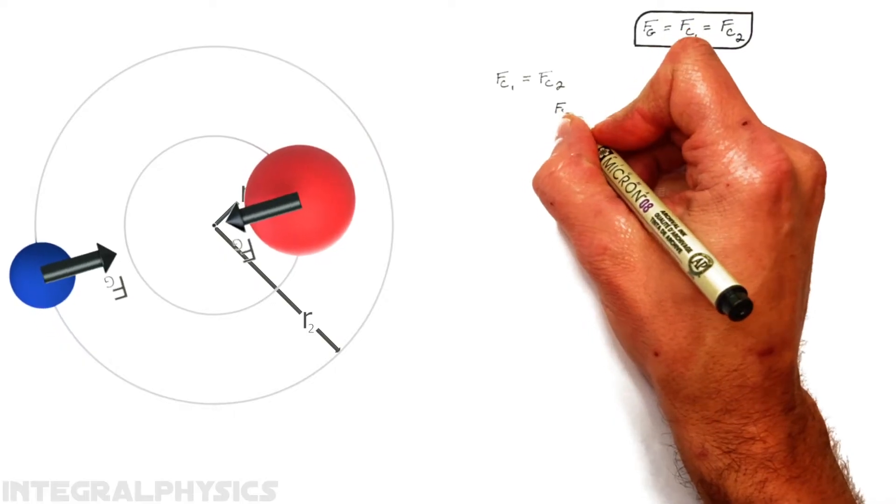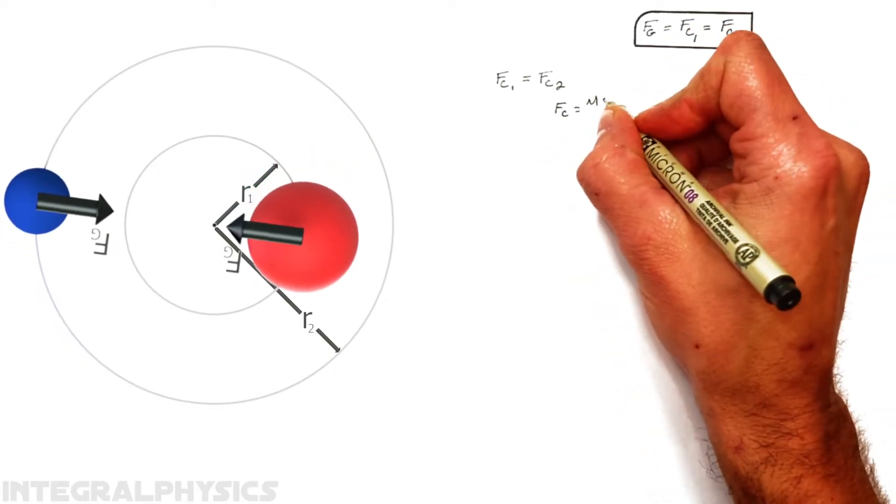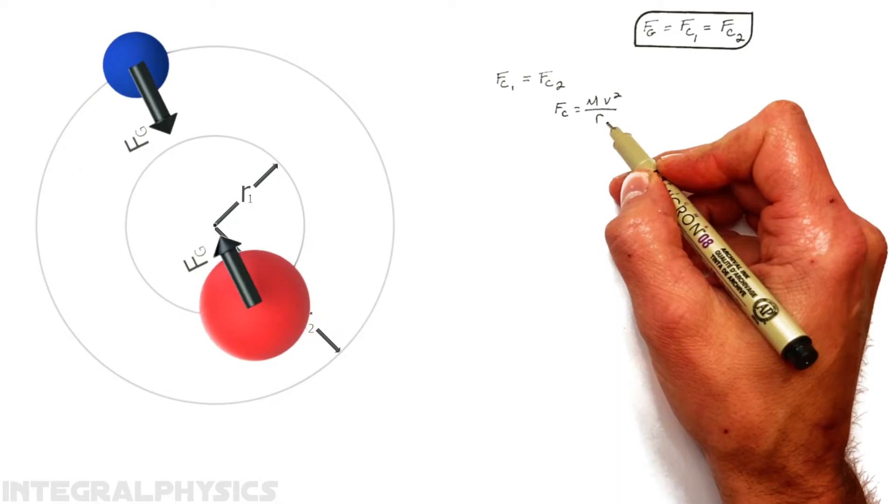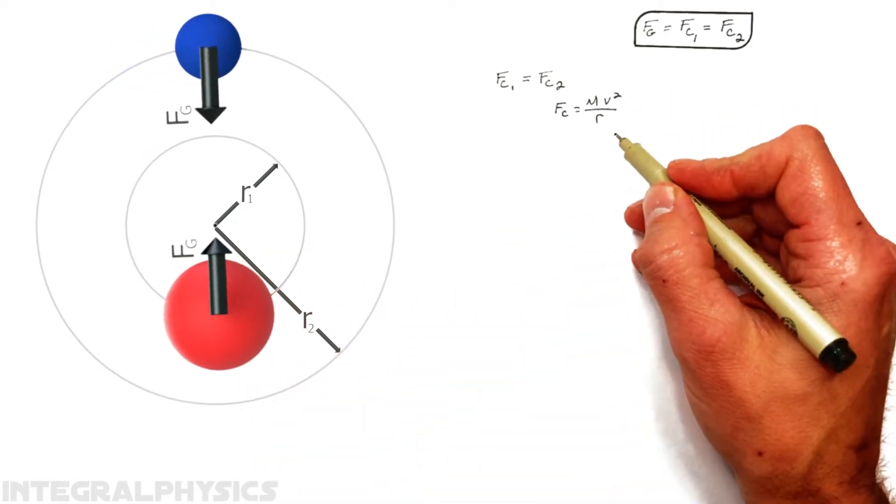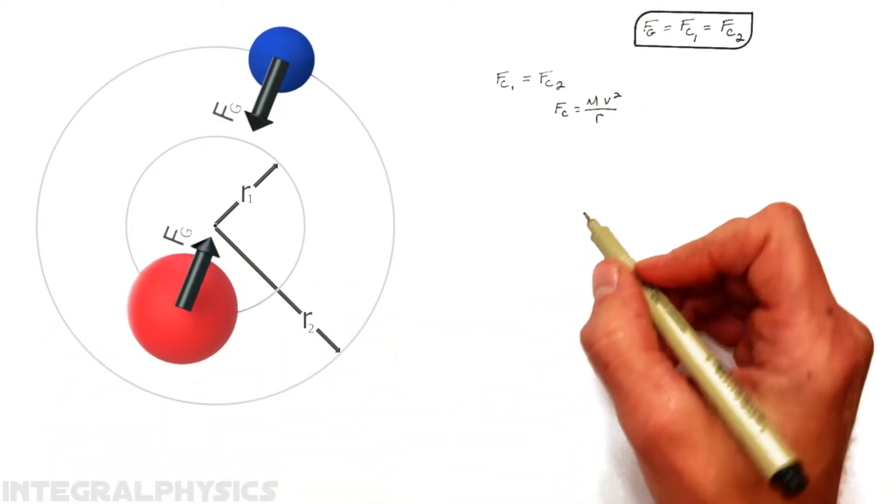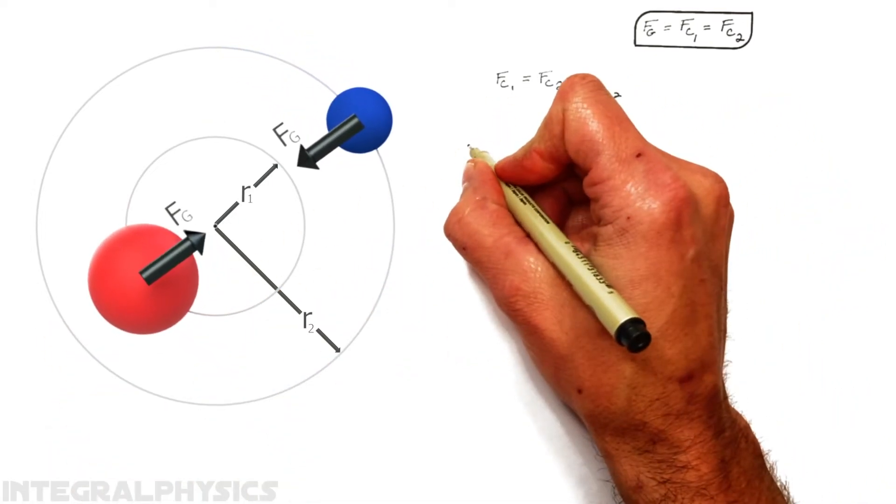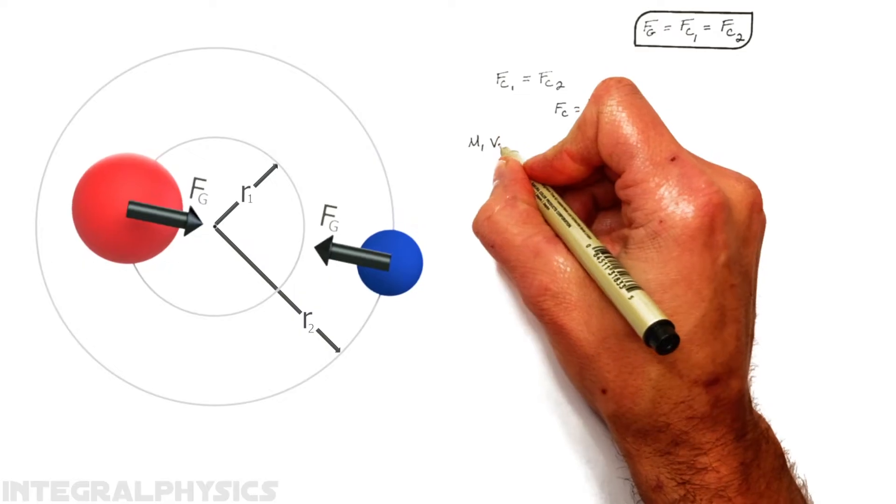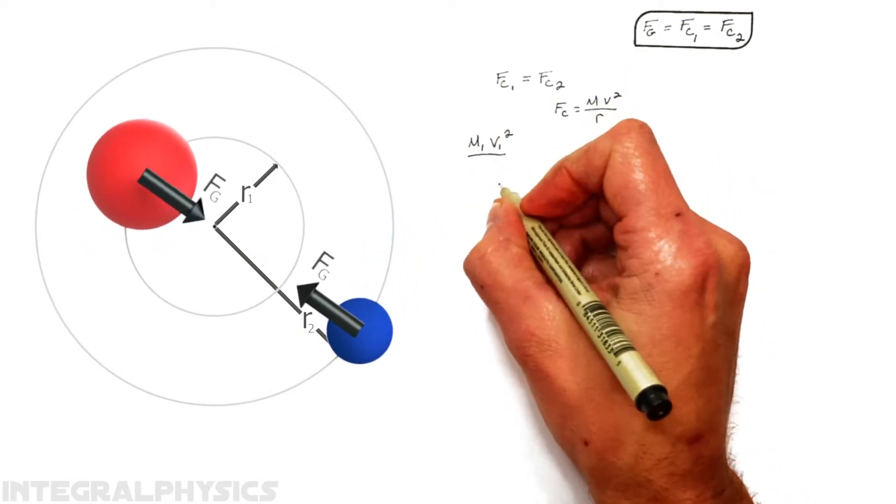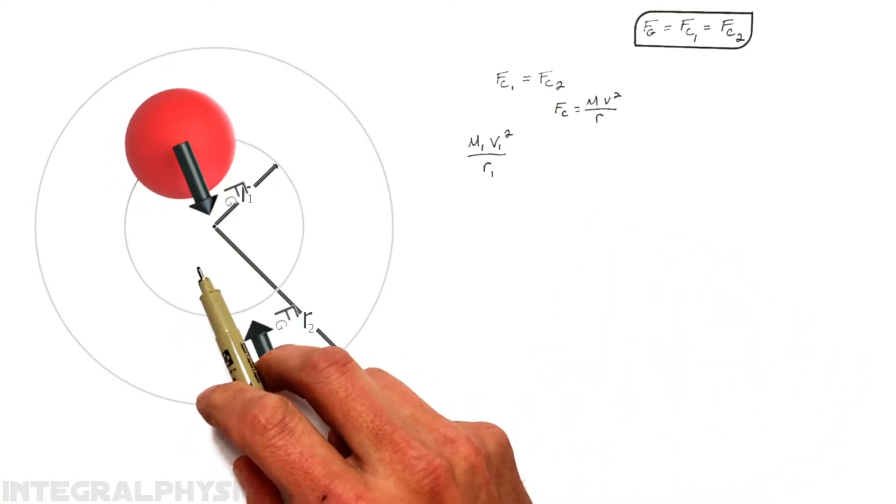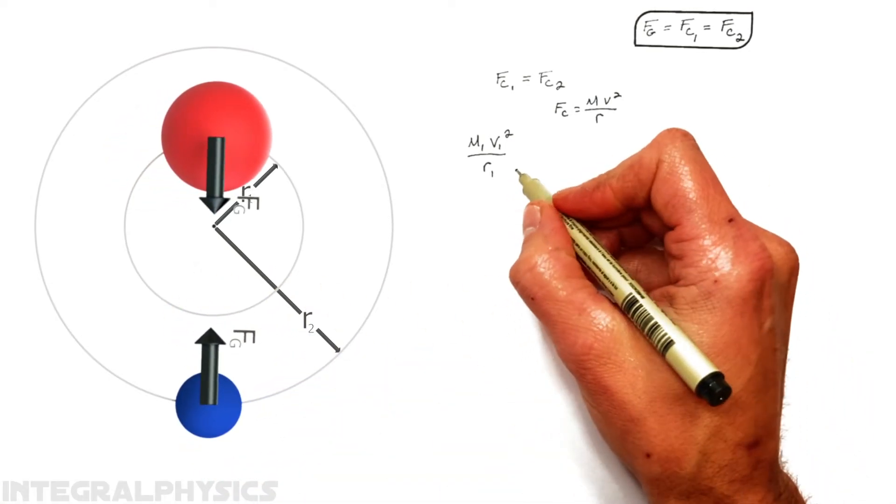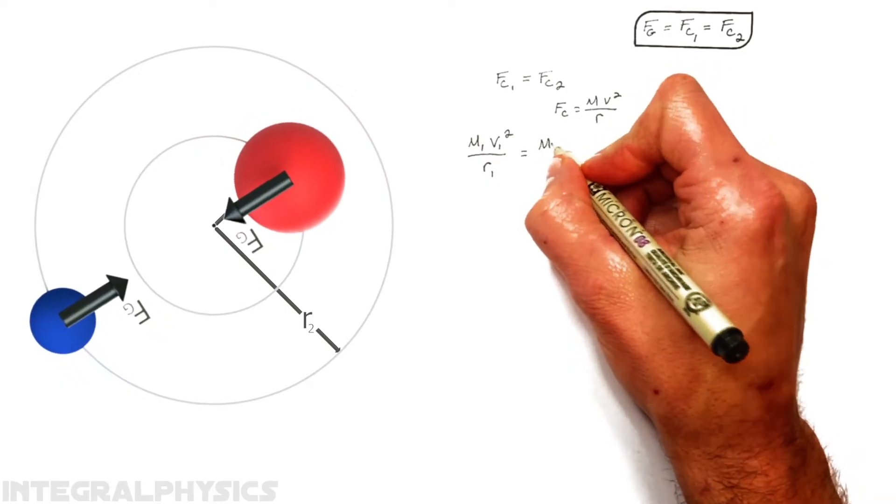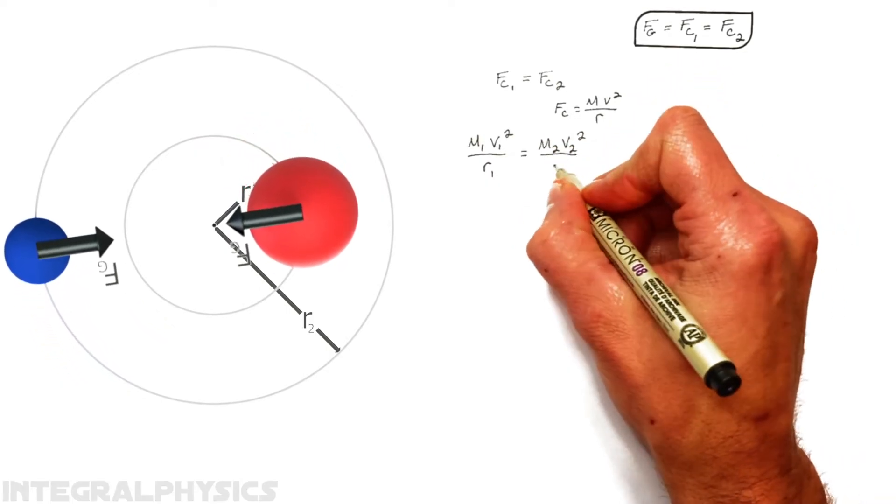Now, centripetal force is given by the mass of an object times its velocity squared divided by the radius of the circle which it's traveling in. In this case, it'd be the radius of orbit. Now, making this equation specific to each of these masses, first looking at mass 1, we're going to say that mass has some value m1 and is traveling around in a circle at some velocity v1. That's squared over, I'm going to call it r1, that is the distance from the barycenter or center of mass to the orbit. Now, we're going to set that equal to the centripetal force acting on this second object. I'm going to call that m2 v2² over r2.